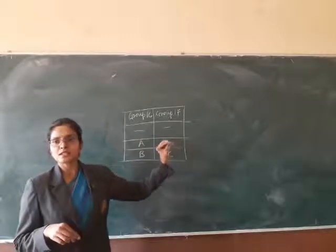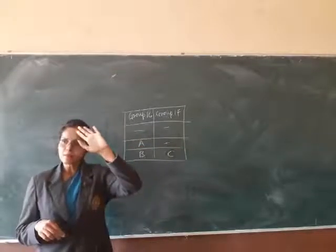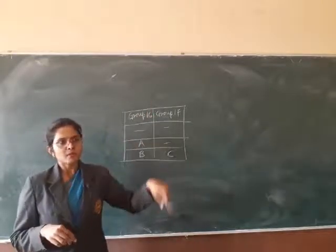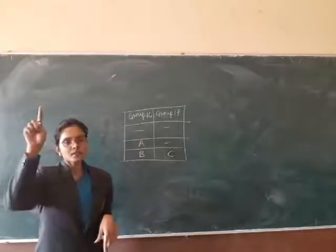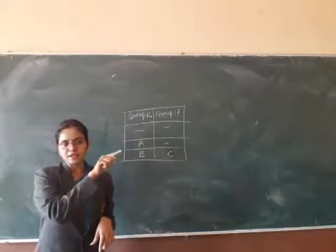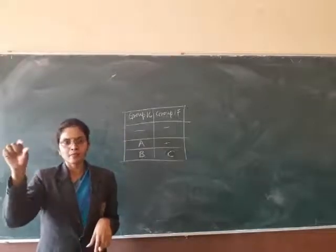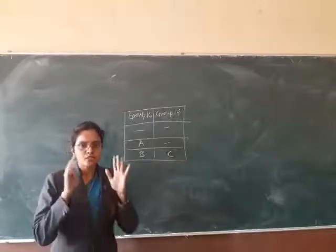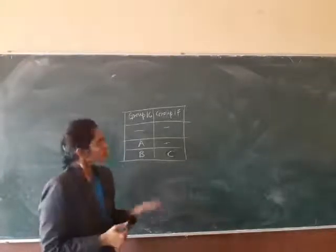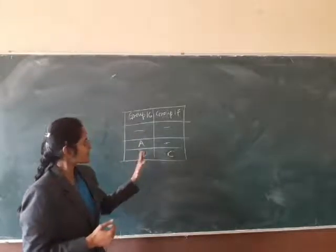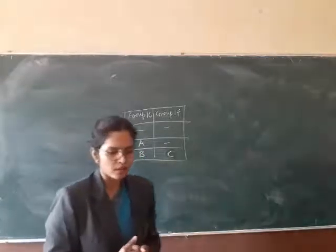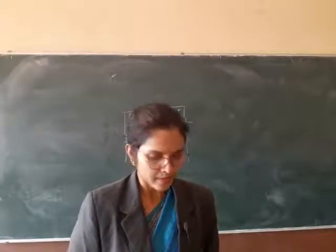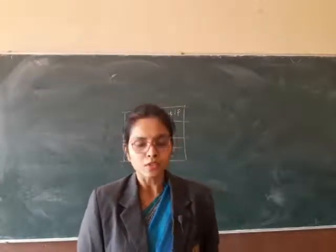18 के भी सारे members non-metals होते हैं। आपके दिमाग में periodic table छपी होनी चाहिए — group 1, 2, फिर 15, 16, 17, 18। पहले 2 periods में बीच के groups नहीं होते। Group number 16 के members non-metals होते हैं, इसलिए A क्या होगा? Non-metal। Answer: A is a non-metal।